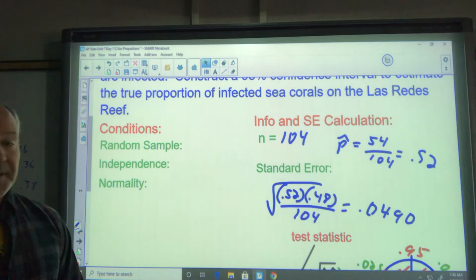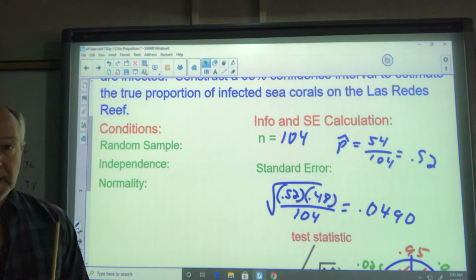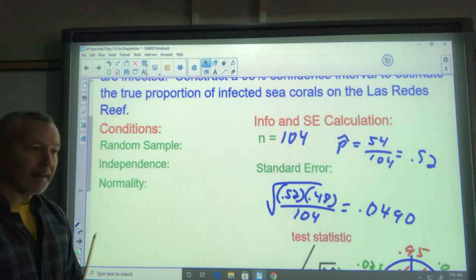And normality, central proportion, P times Q, in this case P hat times Q hat must be greater or equal to 10. N times P hat would be greater or equal to 10, and N times Q hat would be greater or equal to 10.